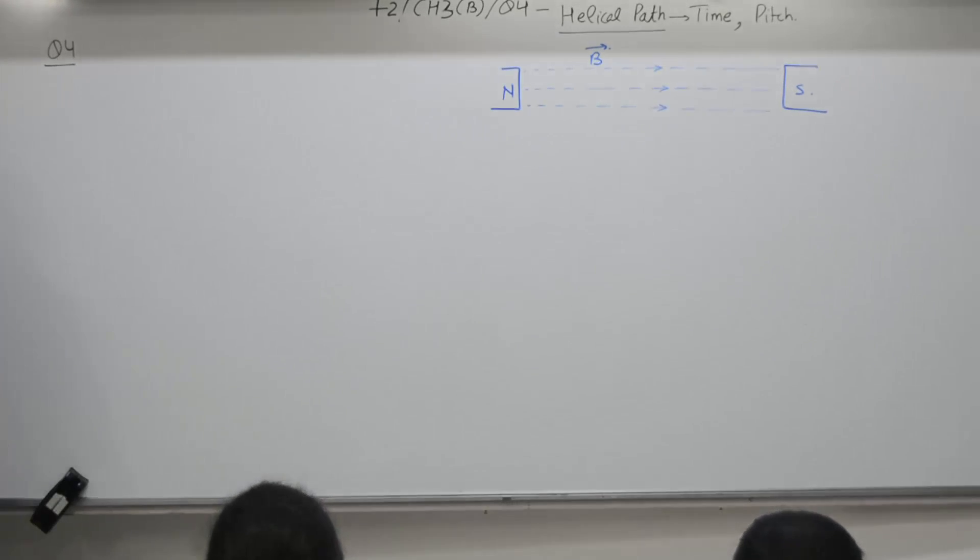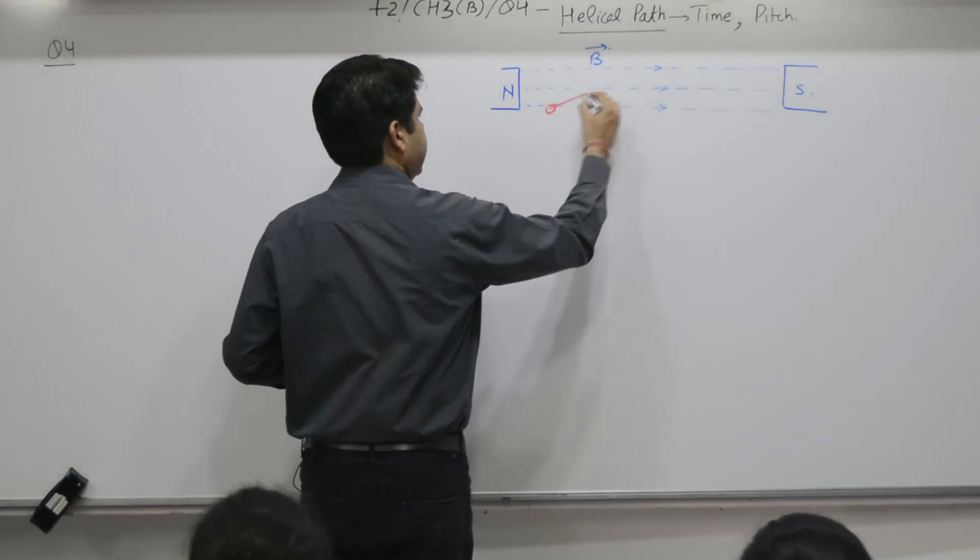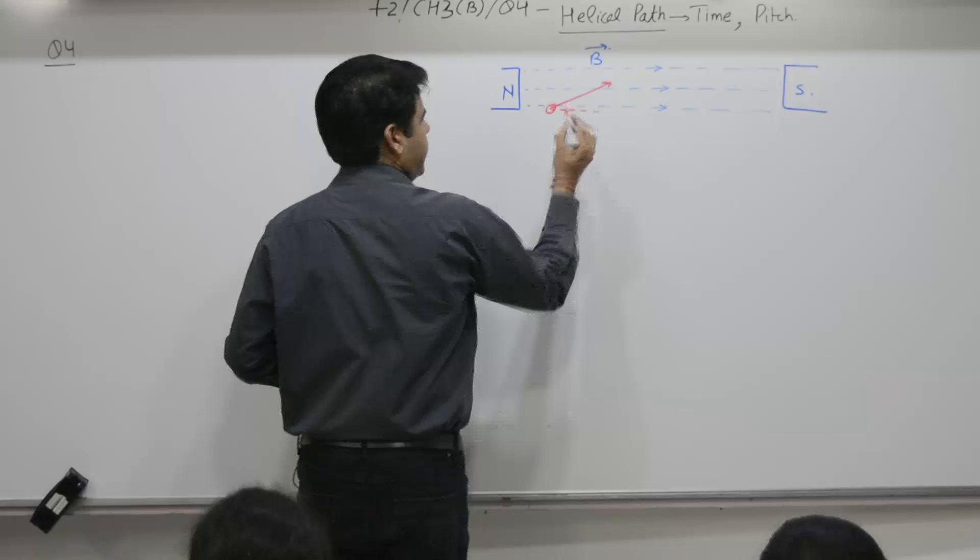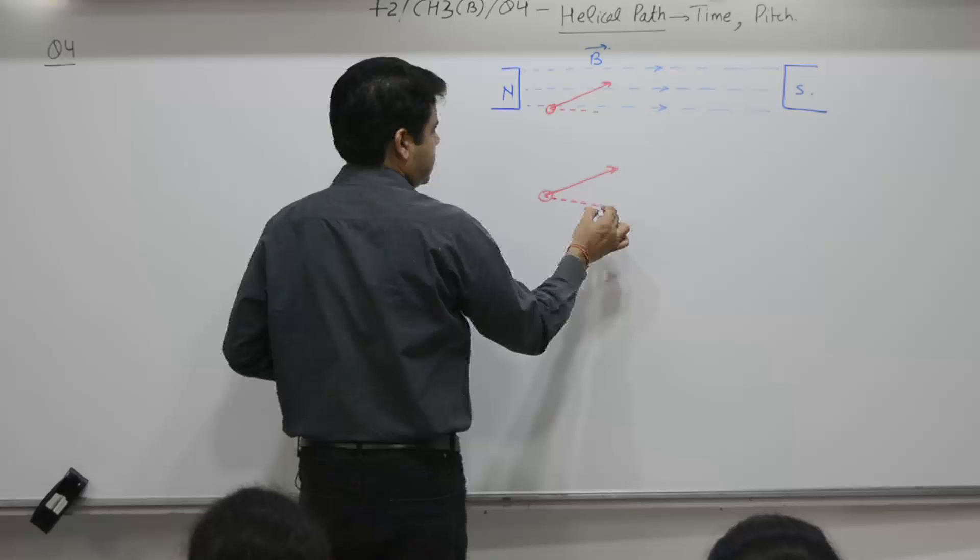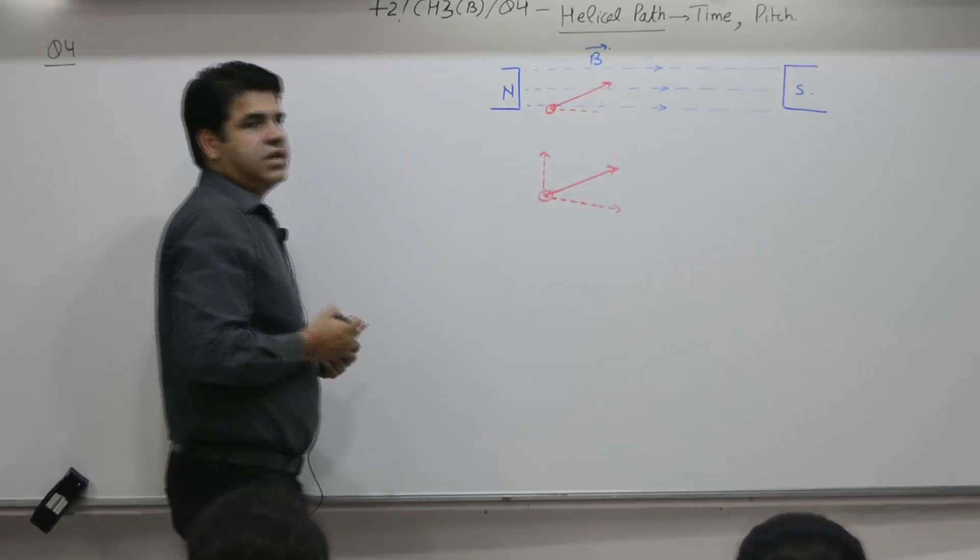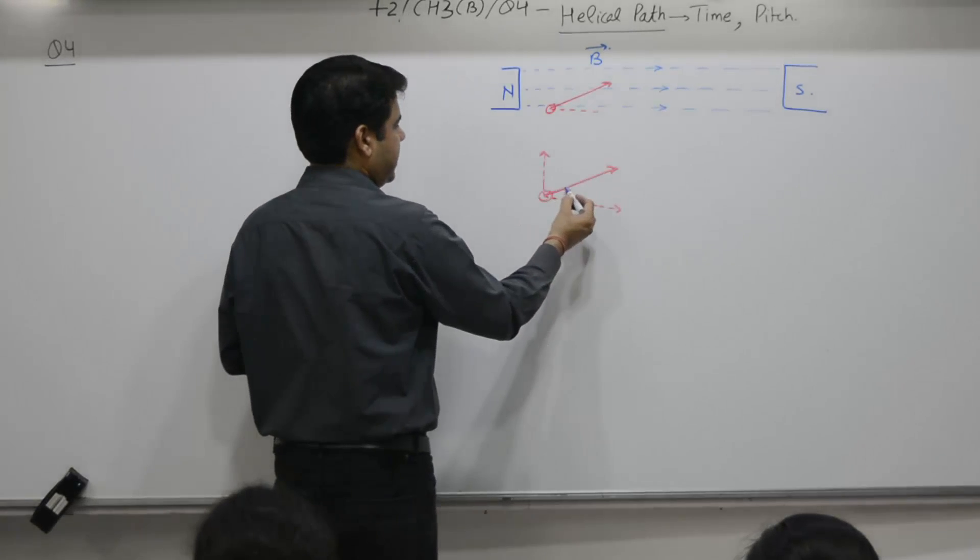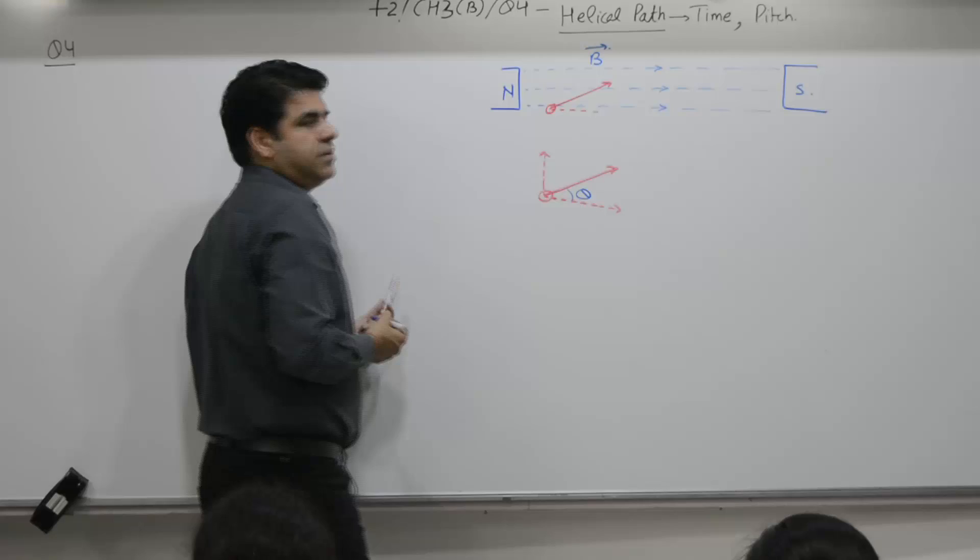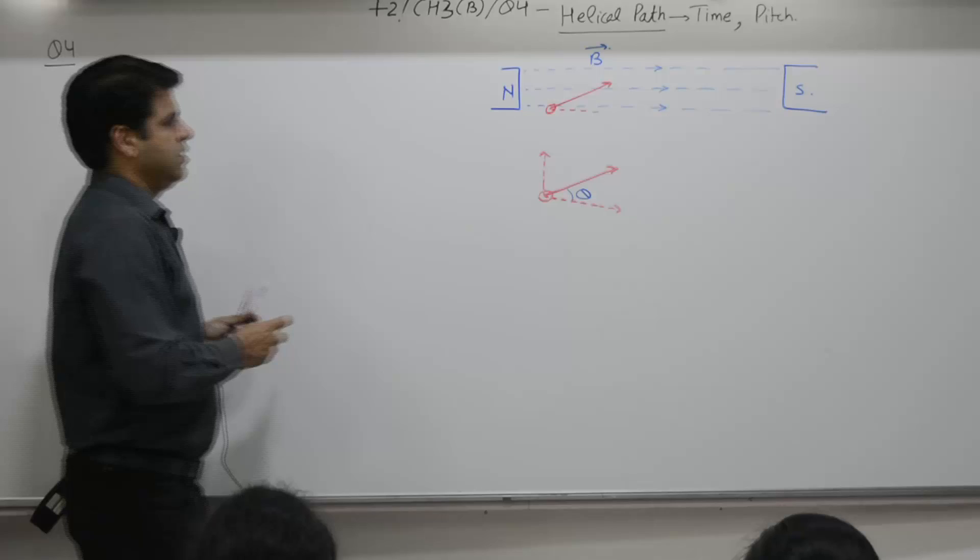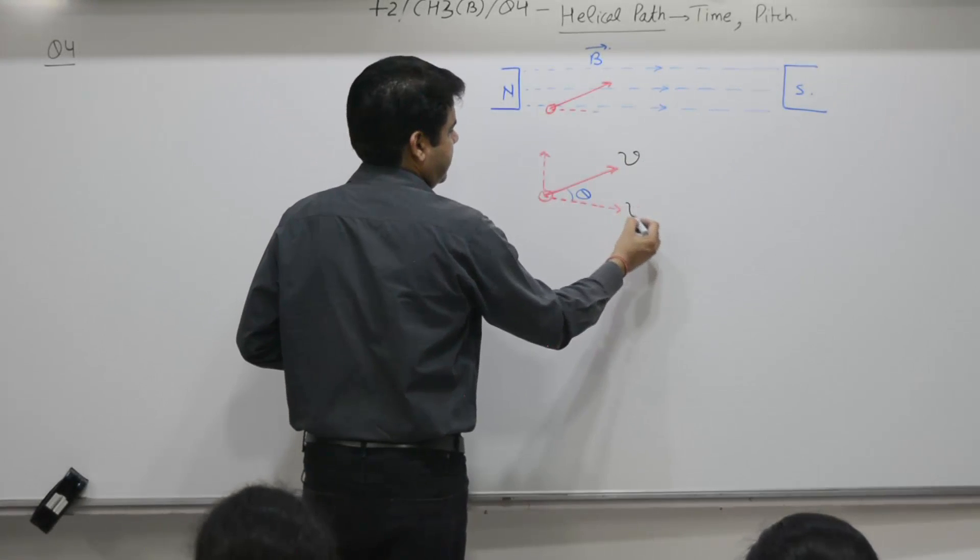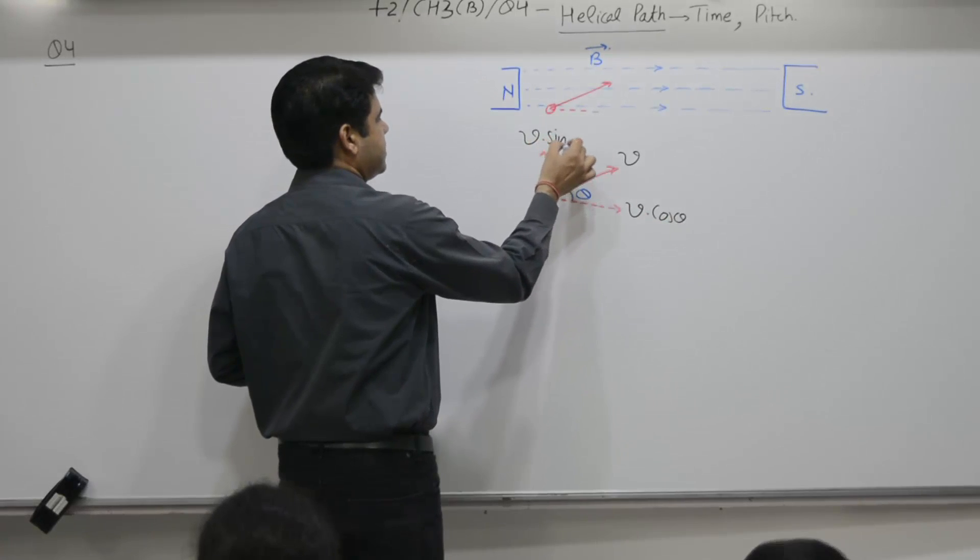Here, the charge particle enters at an angle with the field, that means it has two components, one is horizontal component, another is a vertical component. This angle theta, it is a horizontal component. If it enters with the velocity v, horizontal component is what? V cos theta. Vertical component is v sin theta.